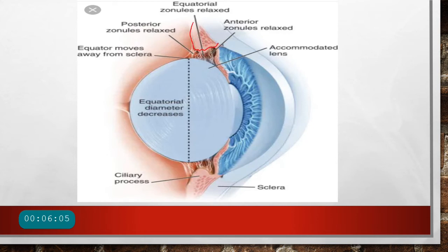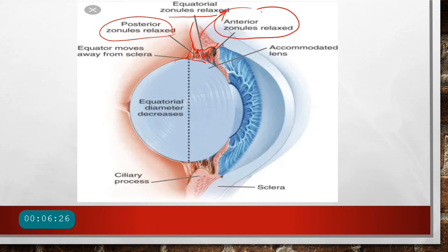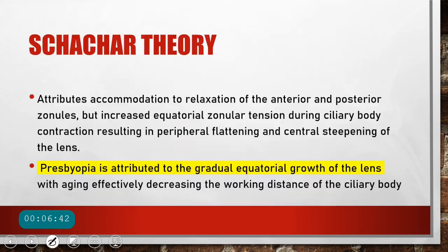This diagram explains the Helmholtz theory. The ciliary body, lens, and zonules are shown. As the ciliary body contracts, the zonules — equatorial, posterior, and anterior — get relaxed. The lens is now more relaxed and takes a more spherical shape in the accommodative state, increasing the power of the lens so we can focus on near objects.